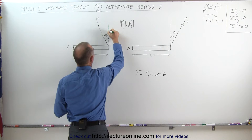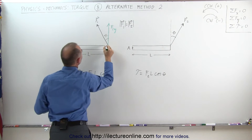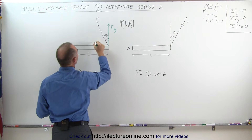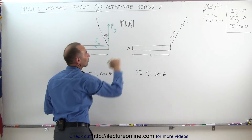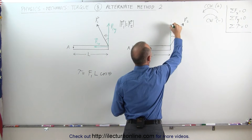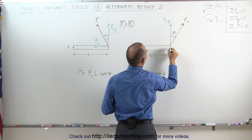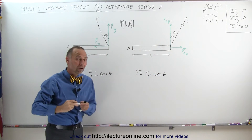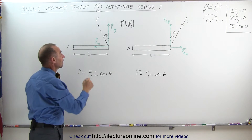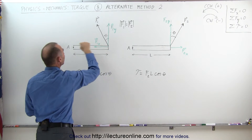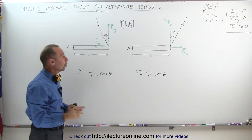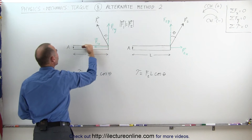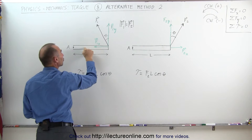Here would be F1 in the Y direction and here would be F1 in the X direction. We do the same with the second force: here this would be F2 in the Y direction and here we would have F2 in the X direction. Now notice a force can only apply a torque if the distance between the line of action of the force and the pivot point is other than zero. Notice that in both cases — for force one and force two — the X component goes right through the pivot point. So the X component cannot contribute to the torque at all.